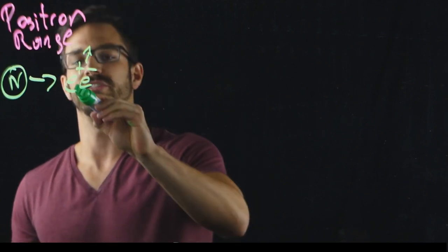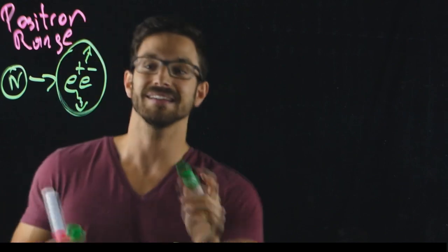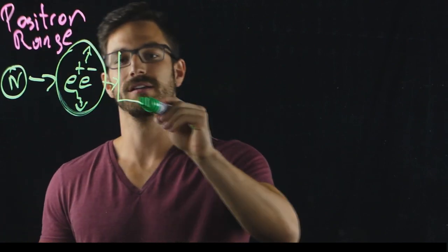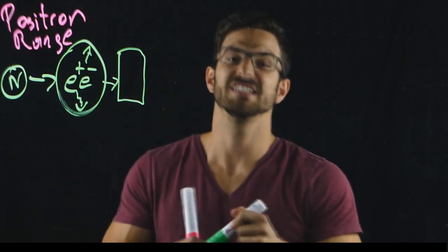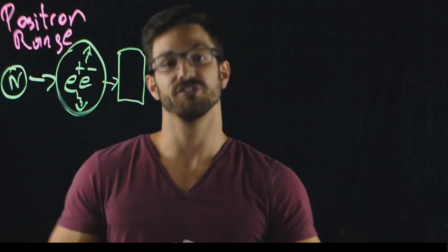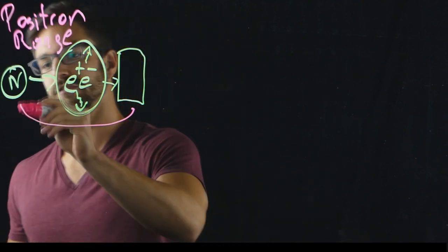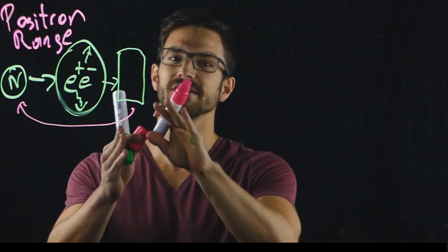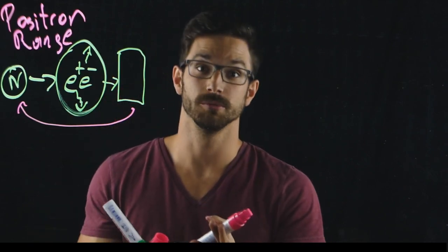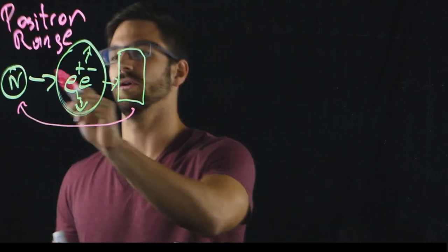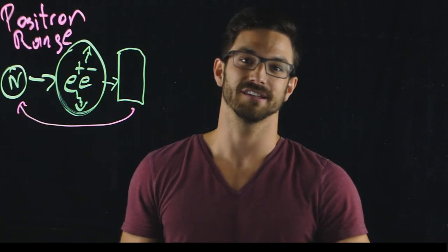There it produces two photons that can be detected, saved and reconstructed to a final PET image. This PET image actually shows the tracer distribution of the injected tracer. This tracer distribution, this map, is highly dependent on the physical properties of the injected tracer.